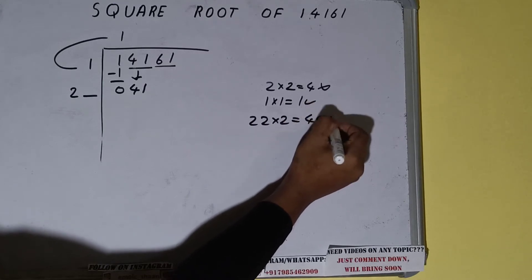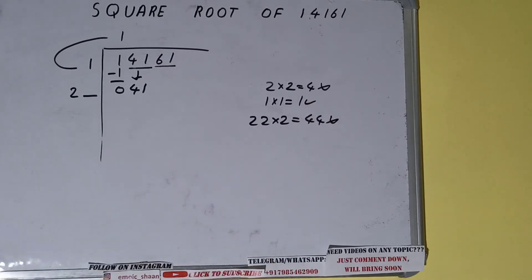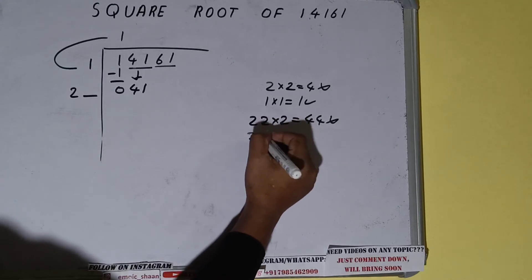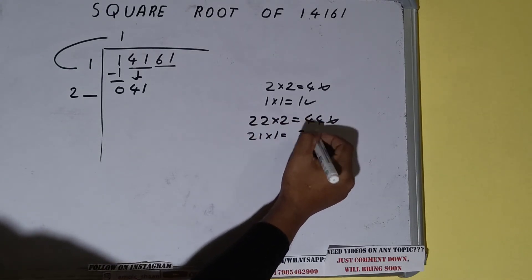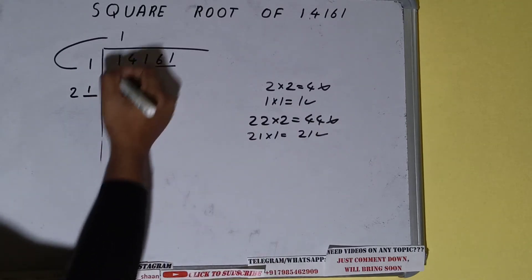So we can try 2 times—that is 22 into 2. We can try. It will be 44, which is greater than the number, so we cannot use it. Let's try one time: 21 into 1. We can try. It will be 21 only, which is good to take.